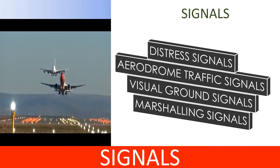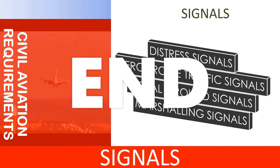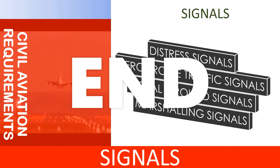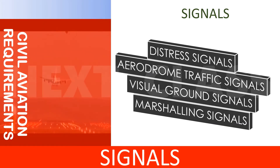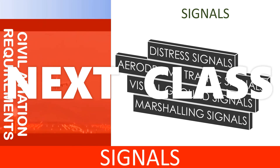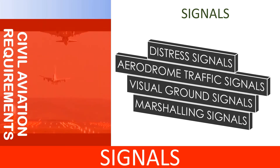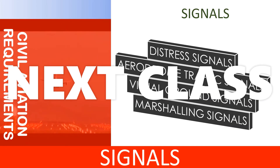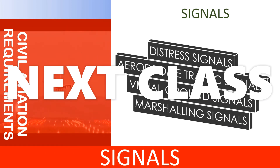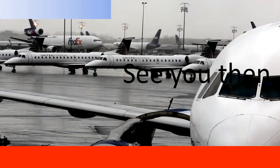This brings us to the end of this session on Rules of the Air. In the next class, we shall discuss about signals: Distress signals, Aerodrome traffic signals, Visual ground signals, and Marshalling signals. See you then.